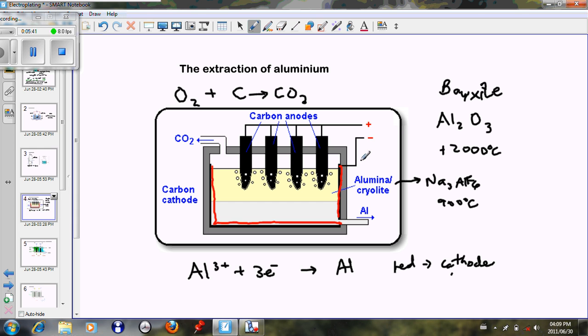The whole pot itself is the negative terminal, and the carbon rods here are your positive terminals. At the negative terminal we see that the aluminium ions from the alumina and cryolite solution receive electrons to form aluminium. At the carbon rod, the oxygen ions that are there become oxygen.